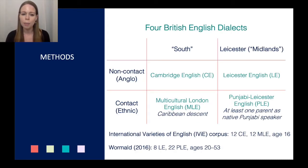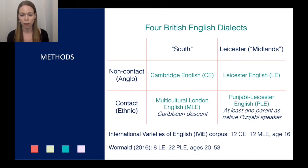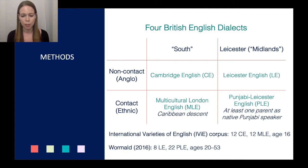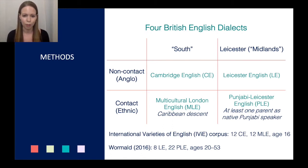We used two read speech corpora: the IVy corpus and a corpus collected by Jess Wormald at York for her dissertation. Each corpus has two dialects matched to one another — a non-contact Anglo variety of English and a contact variety. The IVy corpus contains speech from 12 speakers of Cambridge English and 12 speakers of Multicultural London English (MLE) of Caribbean descent, all around age 16. The Wormald 2016 corpus contains 8 Leicester English speakers and 22 Punjabi Leicester English speakers, where at least one parent was a native Punjabi speaker.